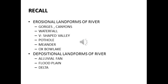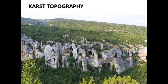Now we will move to the different landforms formed by the action of underground water — karst topography. So what does this picture show? Can you identify anything? You can find some caves — some parts which were dissolved by the action of water. In the hilly region it looks like a mountain, but some parts were dissolved due to the action of underground water.